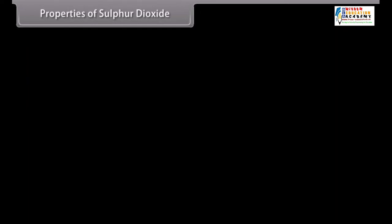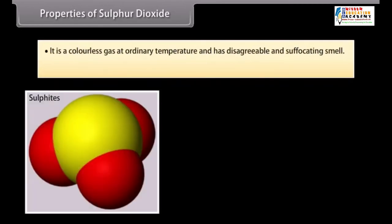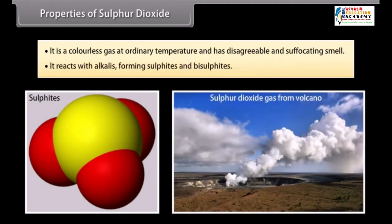Properties of Sulphur Dioxide. It is a colourless gas at ordinary temperature and has disagreeable and suffocating smell. It reacts with alkalies forming sulphides and bisulphides.